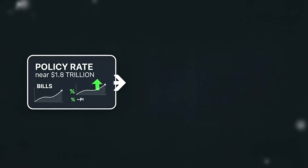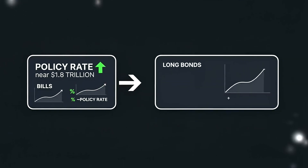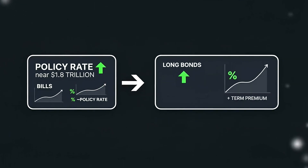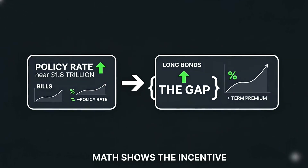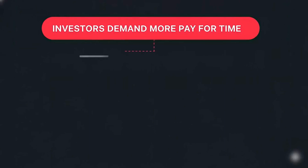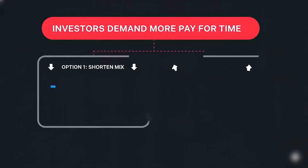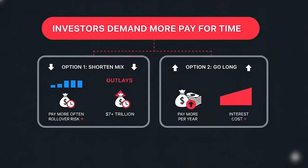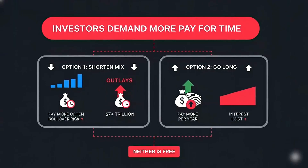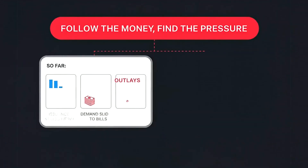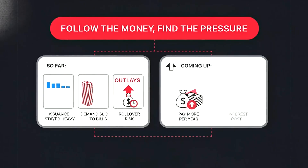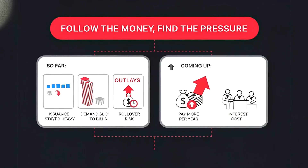Notice the gap. Bills trade close to the policy rate. Long bonds trade with term premium added. If investors demand more pay for time, the Treasury either shortens the mix — paying more often — or pays more per year to go long. Neither is free. Follow the money, find the pressure. Issuance stayed heavy while preferred demand slid to bills.